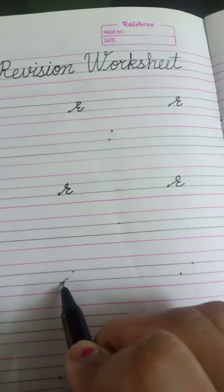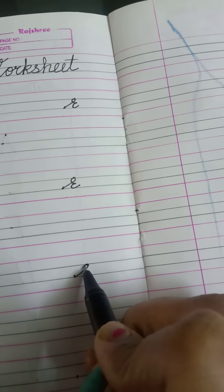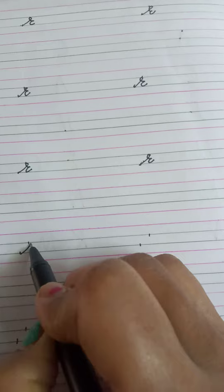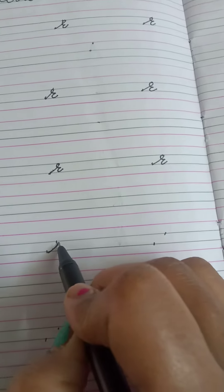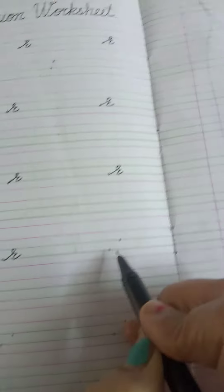Slanting line, turn and half circle. R. Rose. R. Rose. Slanting line, turn and half circle. R. Rose. Slanting line, turn and half circle. R. Rose. R. Rose.